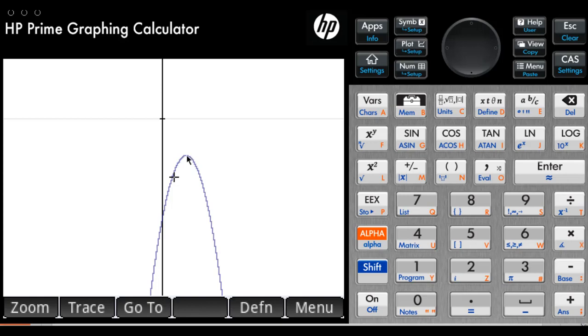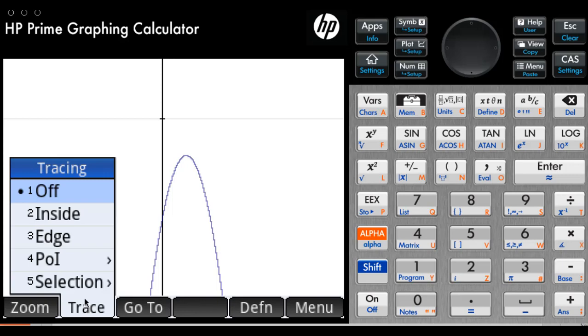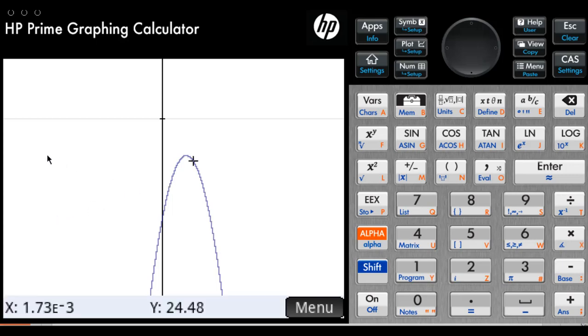And I can say the maximum value of that voltage. I need to trace inside the curve. Inside the curve. There, I can move with a cursor around the curve and find any point. In this case I want the maximum. The maximum is 24.55 volts, and it happens 1.31 milliseconds after the switch closes.